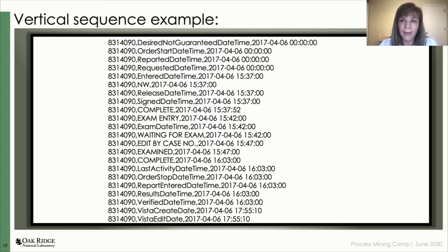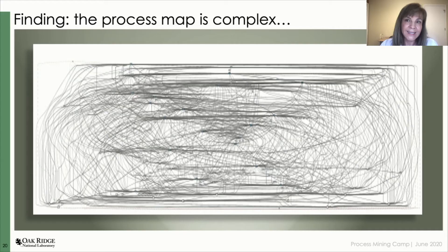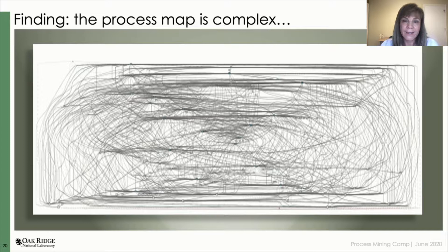We found that the selection of all fields was way too complex to analyze. This slide shows a process map generated with DISCO with only 25% of the paths of the radiology dataset. We didn't know what the resulting process map was going to be like — it is very complex, including too many details related to status changes. In order to get a high-level process overview, this does not work very well. We all felt overwhelmed by such a complicated flow.